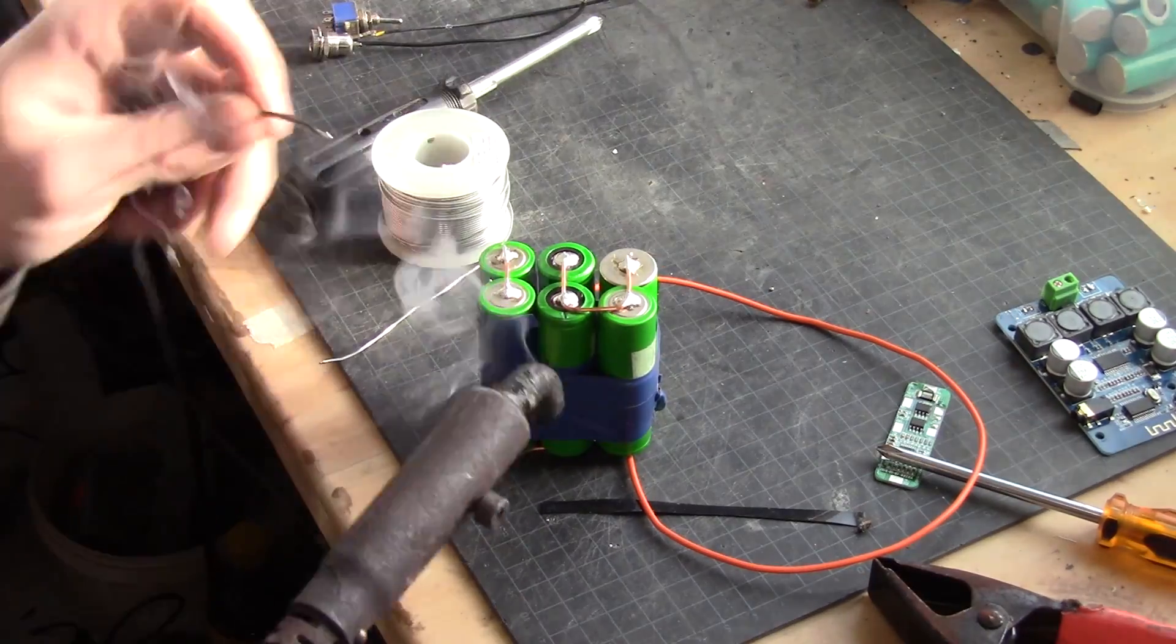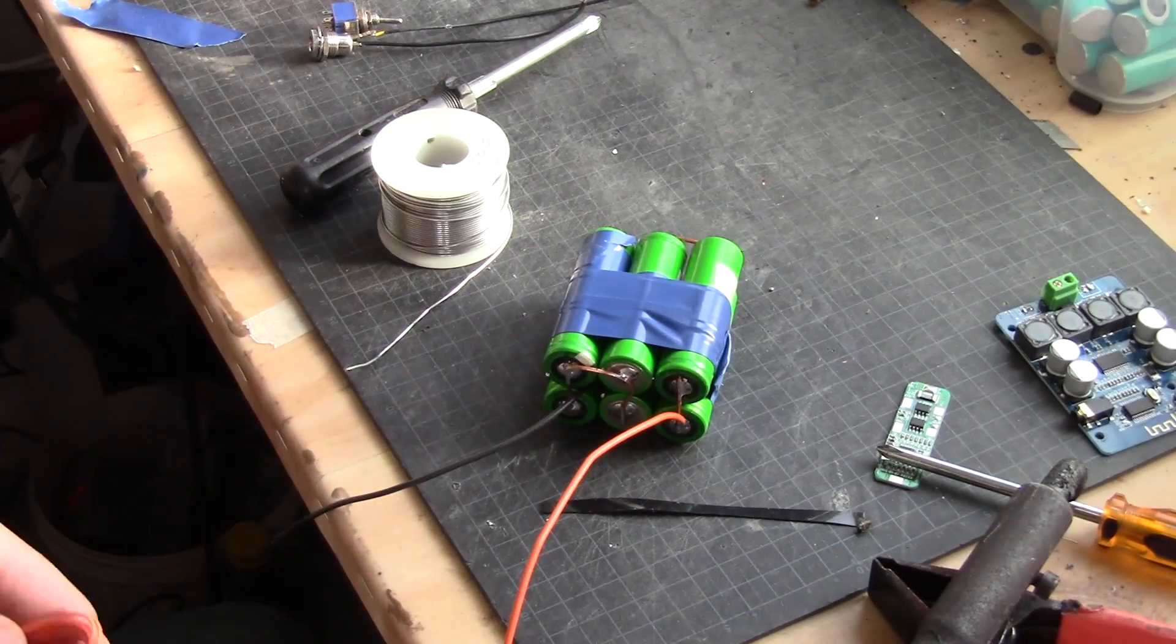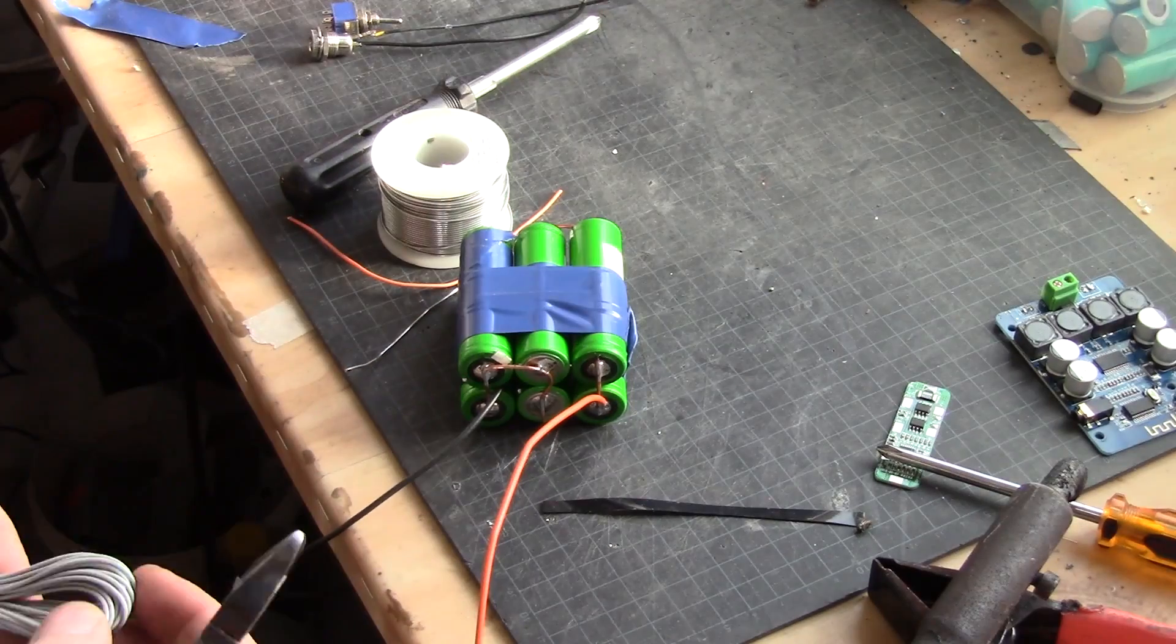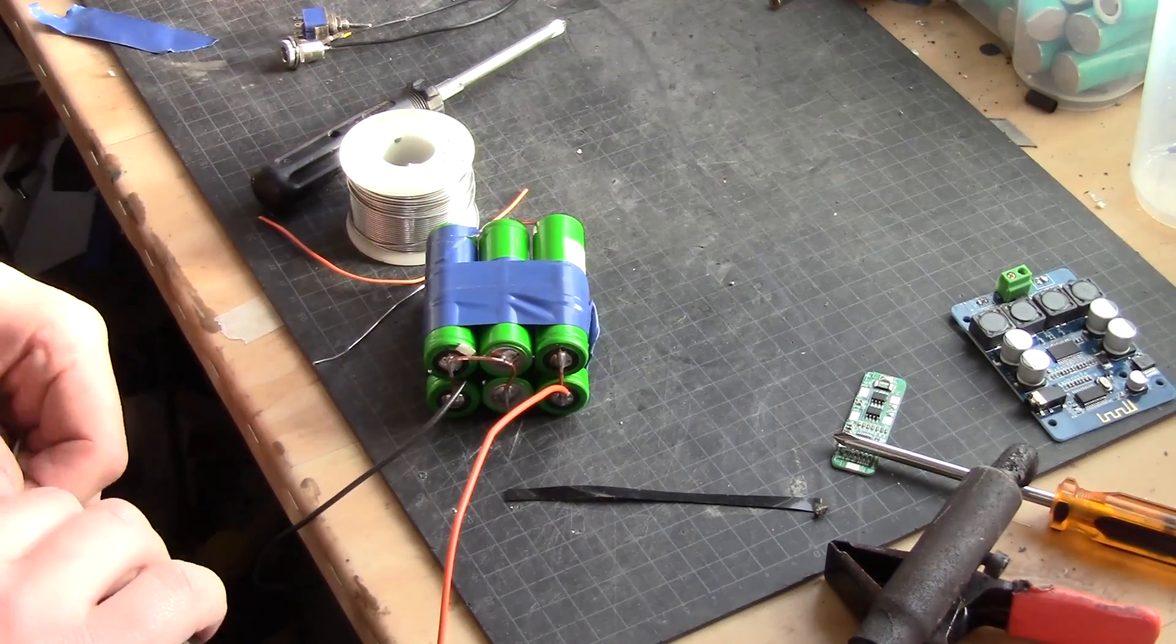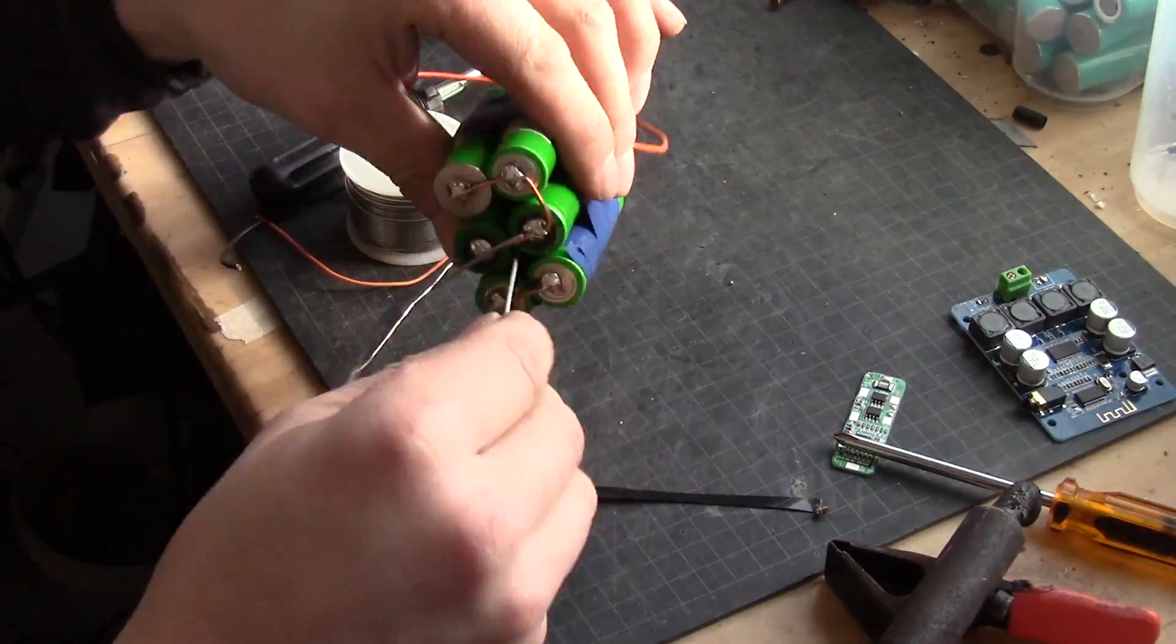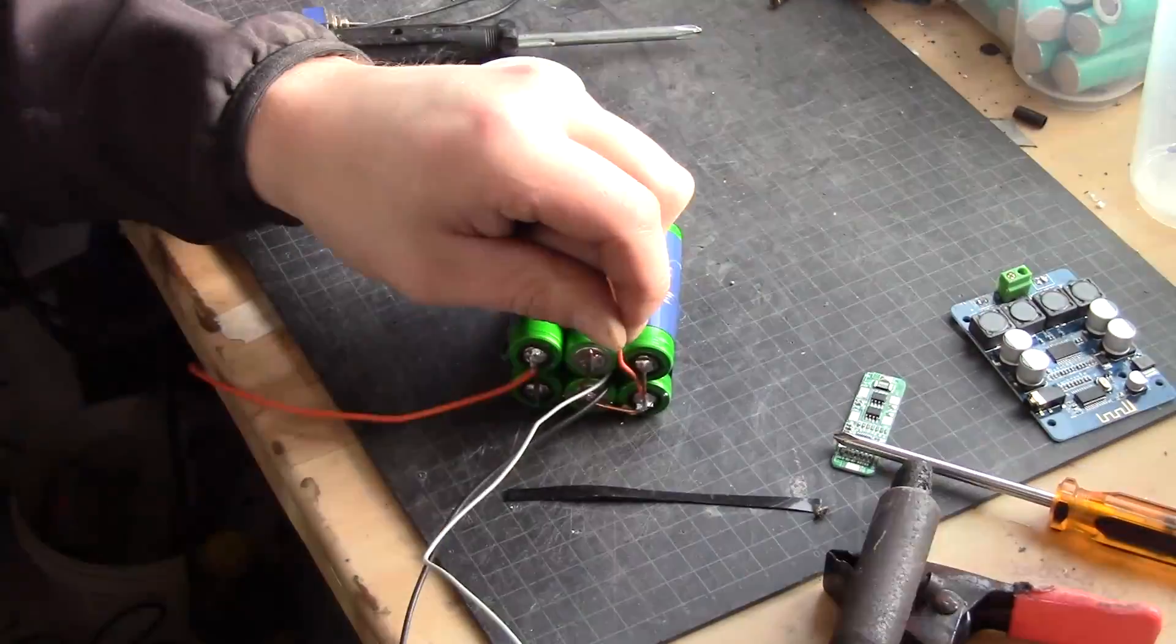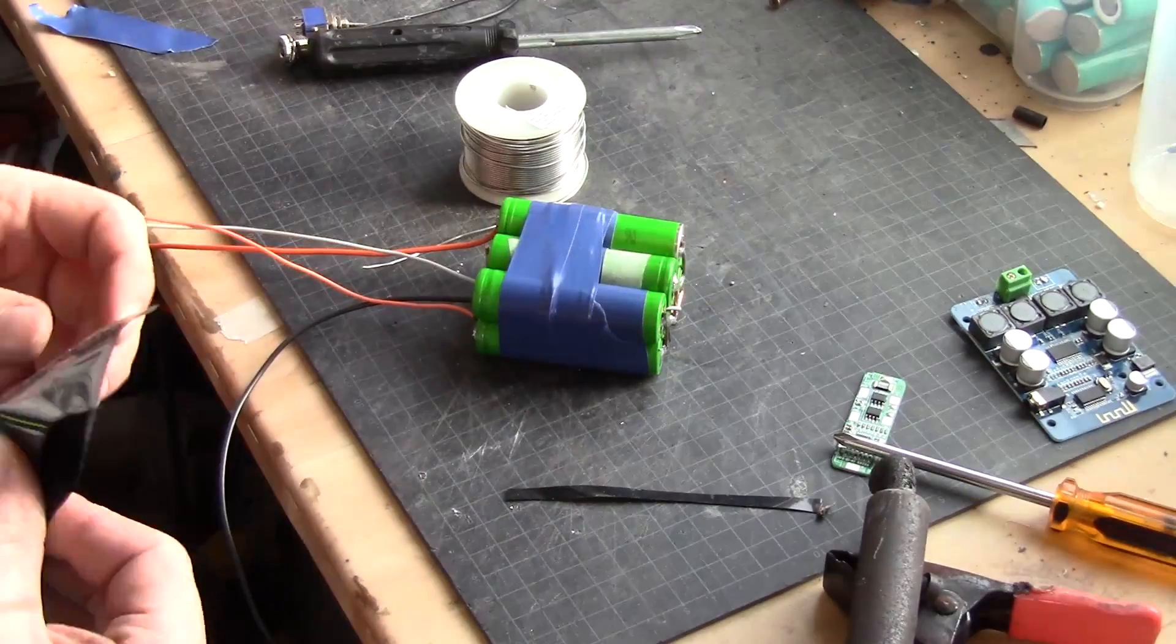Making sure that the cables only come out from one side. As you can see I'm sticking them through. Going back and adding the balance cables as well. And this will be hooked up to the BMS.